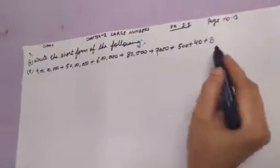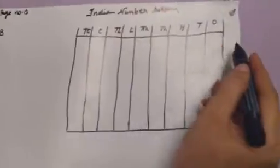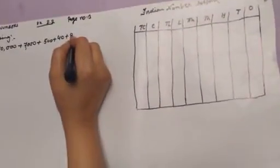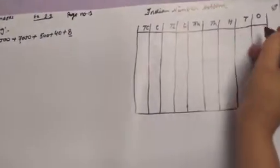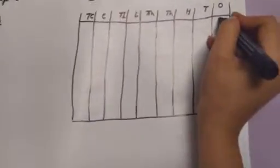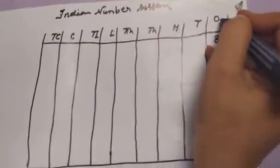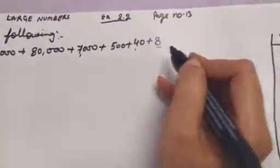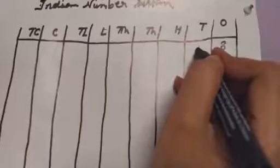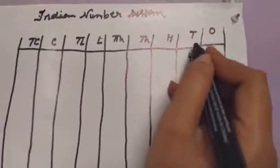We have to write these numbers in this number system. First is eight ones — we will start from ones place, so we put eight in ones place. Second is four tens, so we will write only four in tens place.